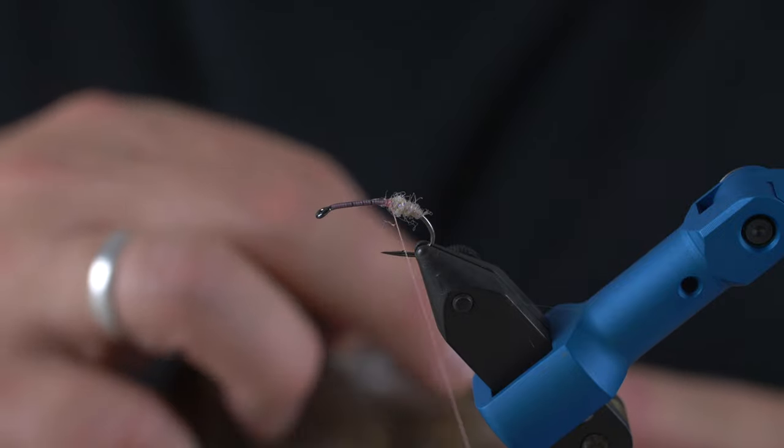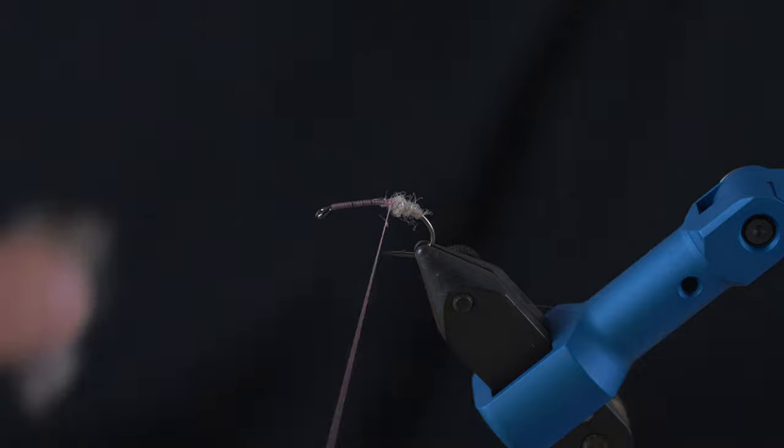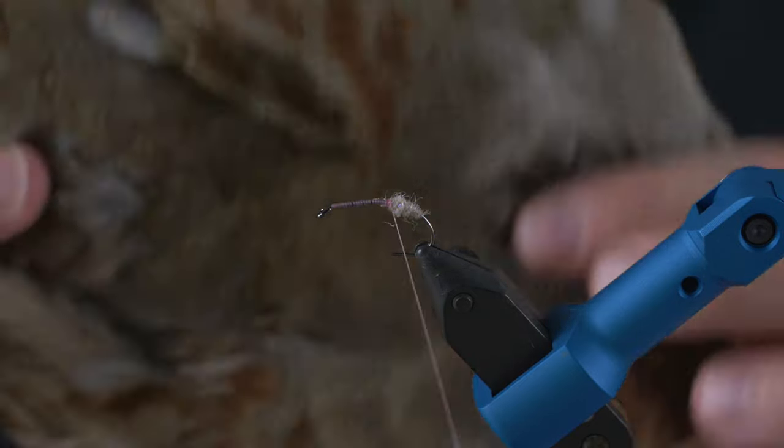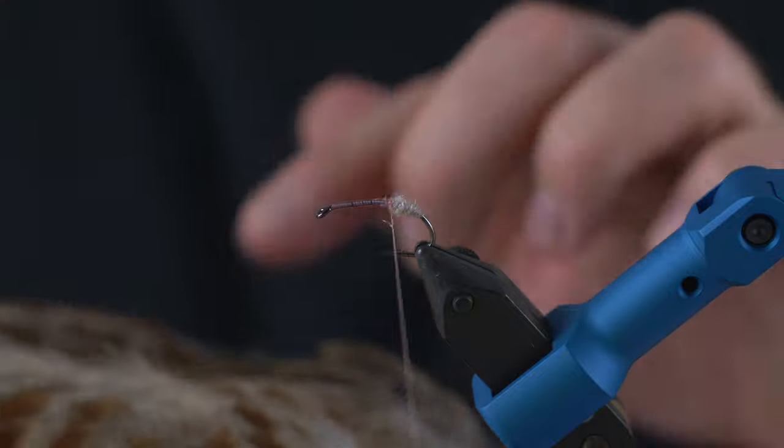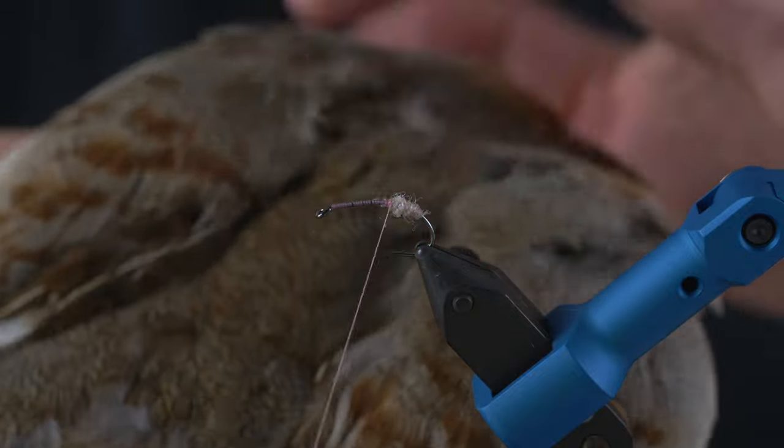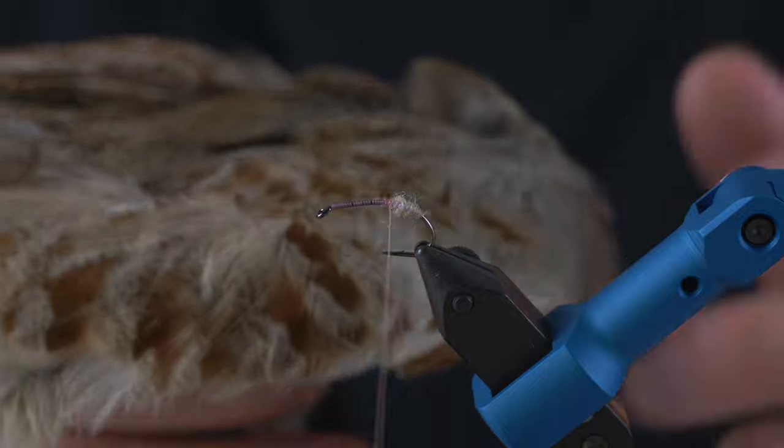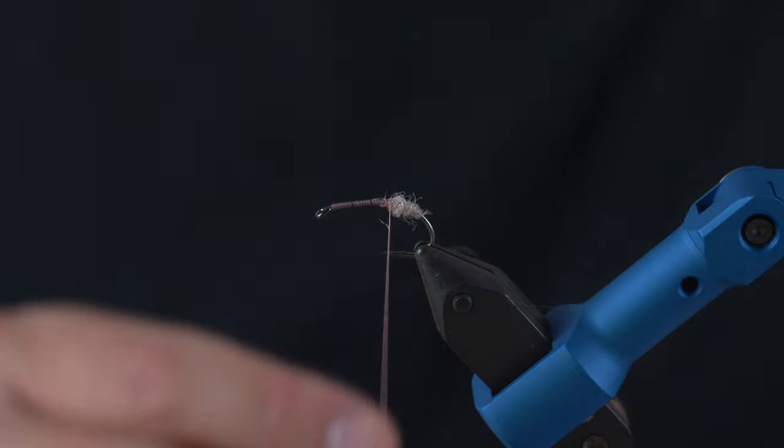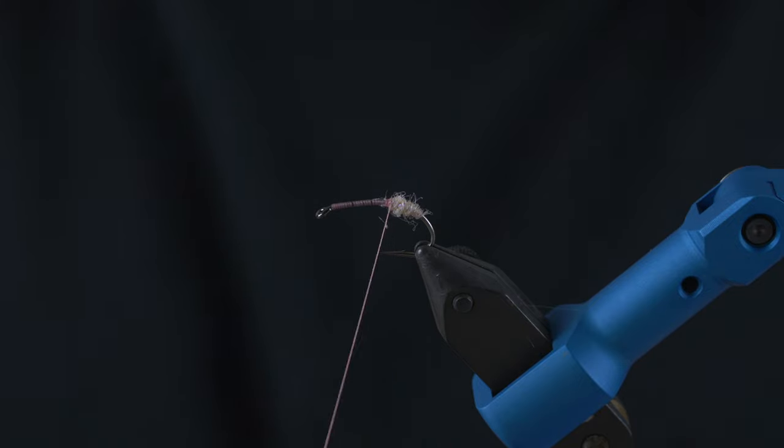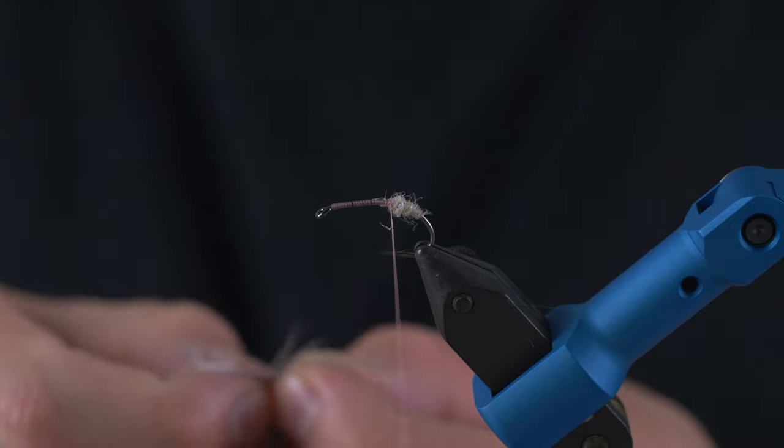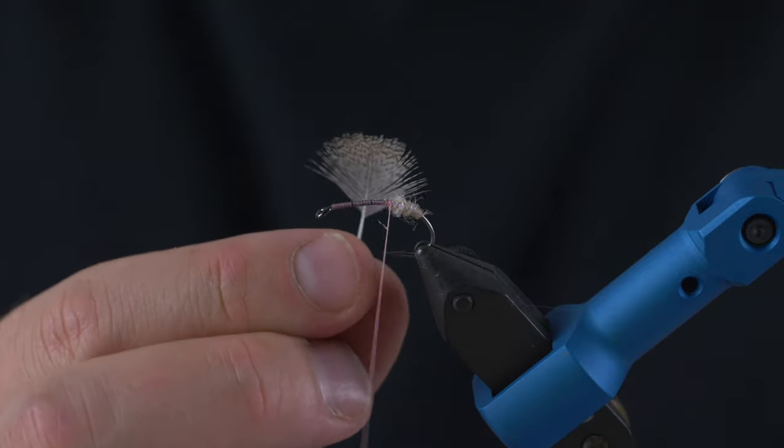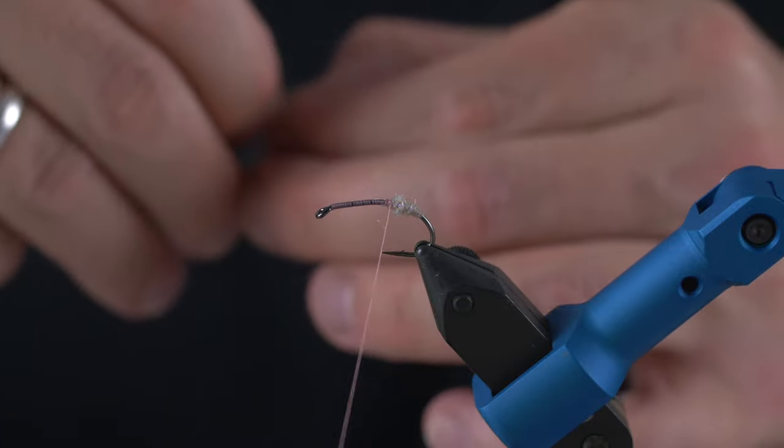If that's not possible then simply buy a bag of loose feathers. But it is better to have a full cape or a full partridge skin because you can choose either the gray and the brown feathers, and you will also have all the different sizes of feathers so you can easily change the size that you need for that particular size of hook or that particular pattern.